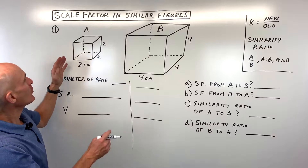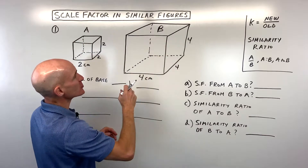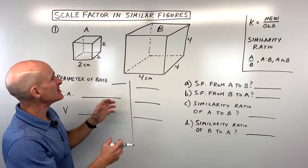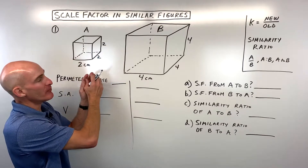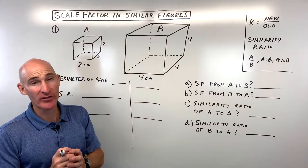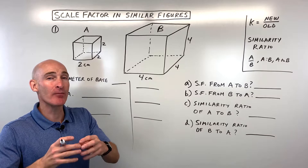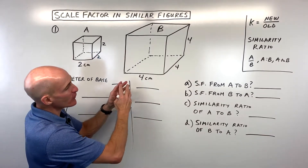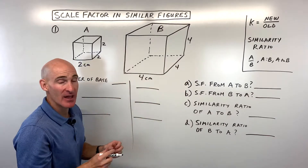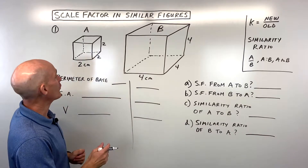For this first example we have cube A and a larger cube B — these are similar figures. Similar means they're the same shape but not the same size, so one is proportionally larger or smaller than the other. All the angle measures are preserved; it's just the corresponding sides are multiplied by a scale factor, kind of like when you expand something on your phone or iPad — it doesn't distort the image, it just makes it larger or smaller.